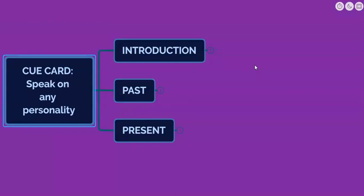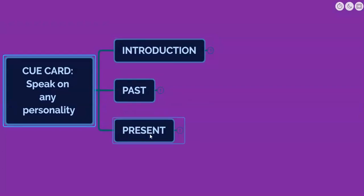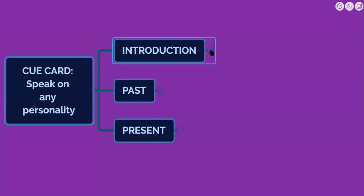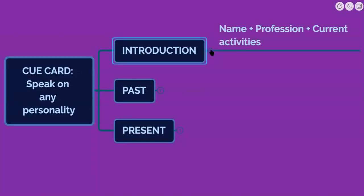I have divided it into an introduction part, then the past, and then the present situation. Let's have a look at each section in detail. In the introduction part, I am going to mention the name of the person, what the personality's name is, then talk about their profession and current activities.